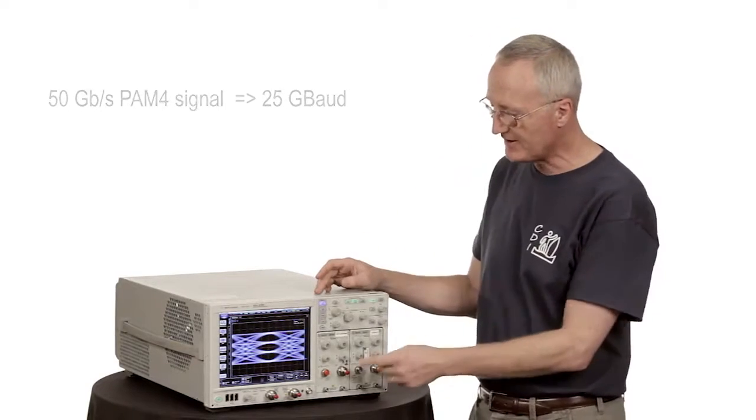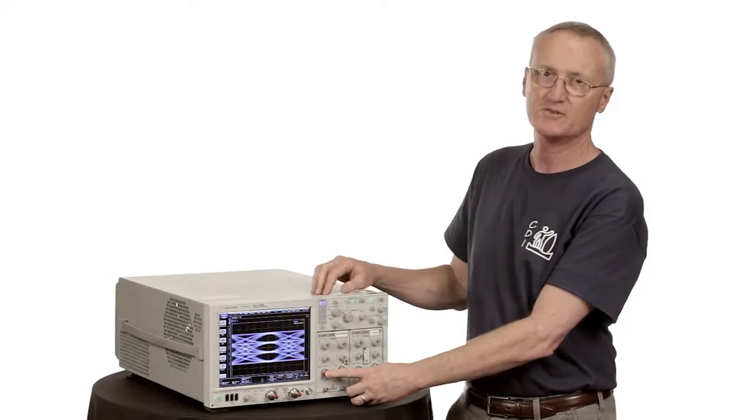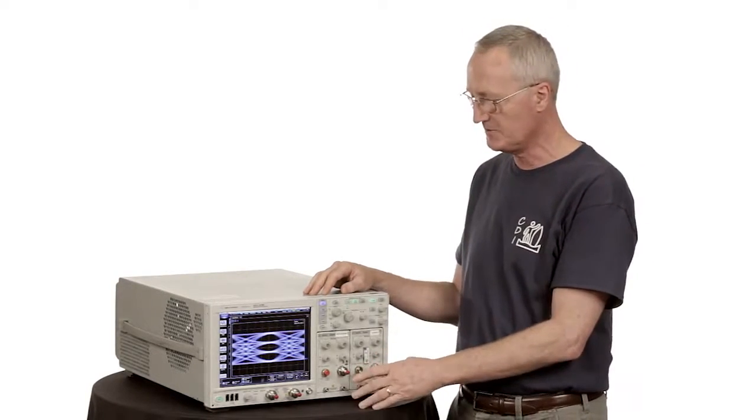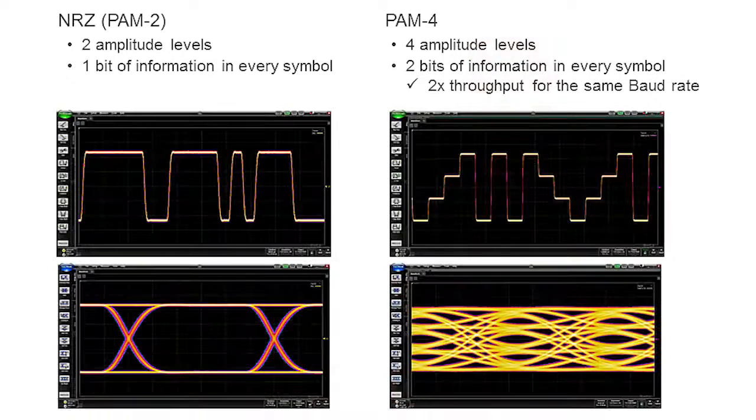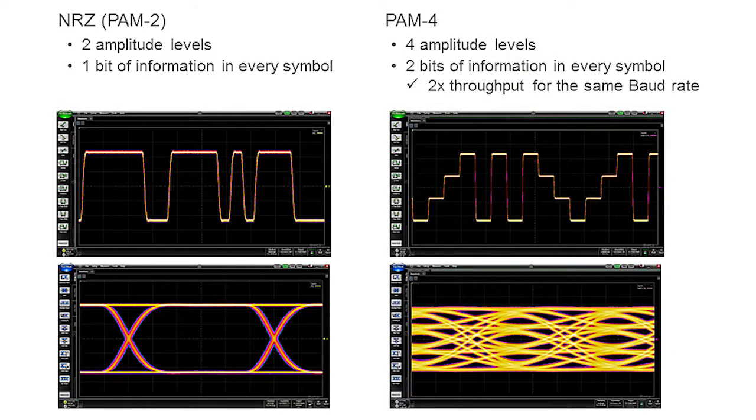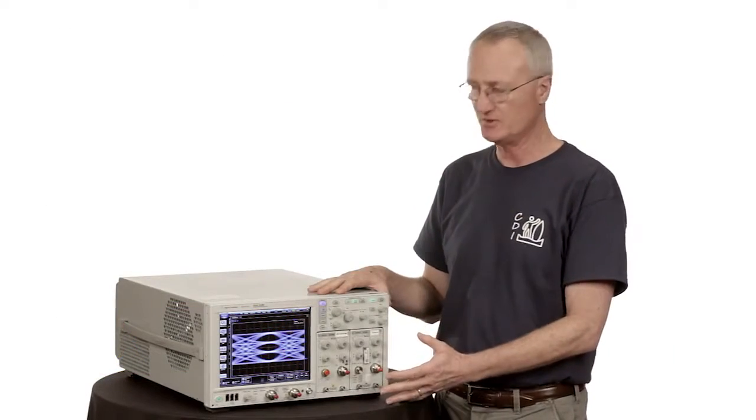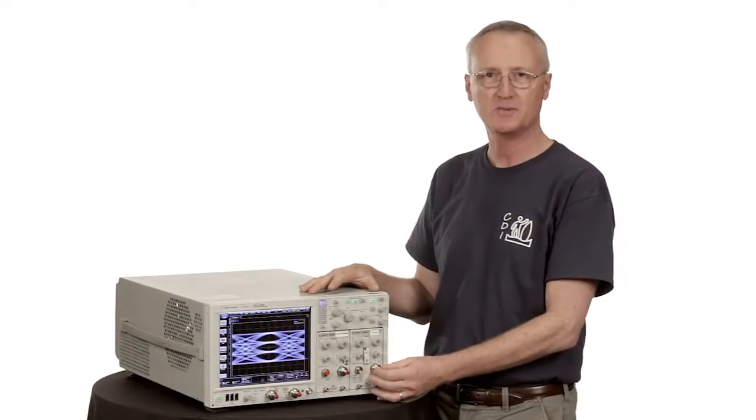Effectively, what happens is the very same reference receiver that we used for 25 gigabit per second is likely to be the reference receiver that would be used for a 50 gigabit per second PAM-4 signal. So in terms of hardware channels, the hardware that we have today for NRZ signals is going to be applicable to the PAM-4 signal.